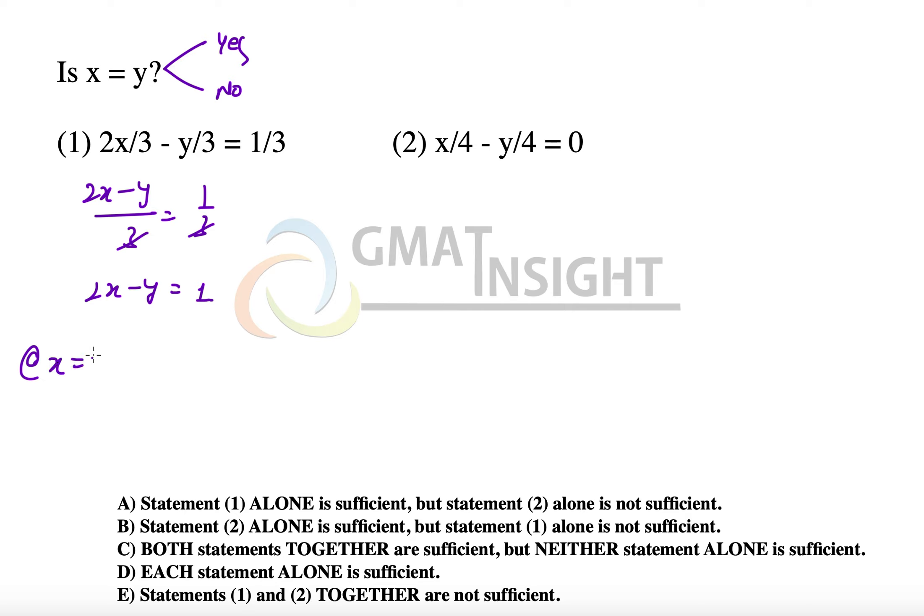So if we choose x equal to y equal to 1, then the condition is satisfied, that means x may be equal to y. But if we choose x equal to 2, then y can be equal to 3, and in that case x is not equal to y. Therefore, the first statement alone is not sufficient because we have inconsistent answers to the question.